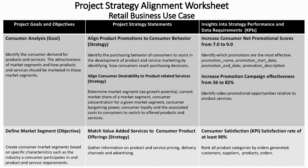The best way to organize our planning statements is in this project strategy alignment worksheet, and we'll take a look at a retail business use case for that purpose. We have a goal of consumer analysis — that is, to identify the consumer demand for our products and services. We also see that we have an objective to find the market segment, and in order to meet the objective and the goal, we need some strategies. One strategy is to align the product promotions to the consumer behavior. Another strategy could be to align consumer desirability to our product-related services.